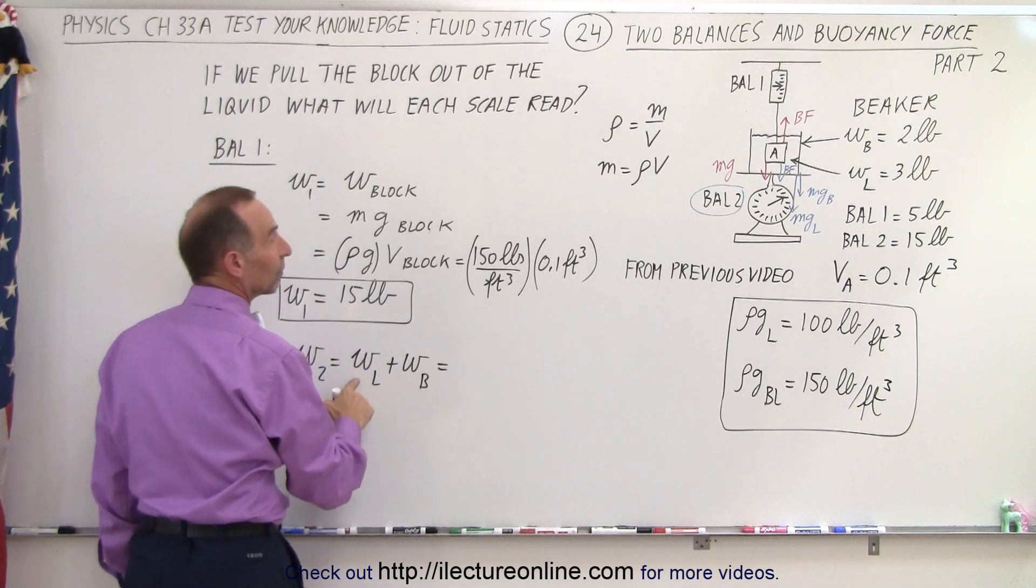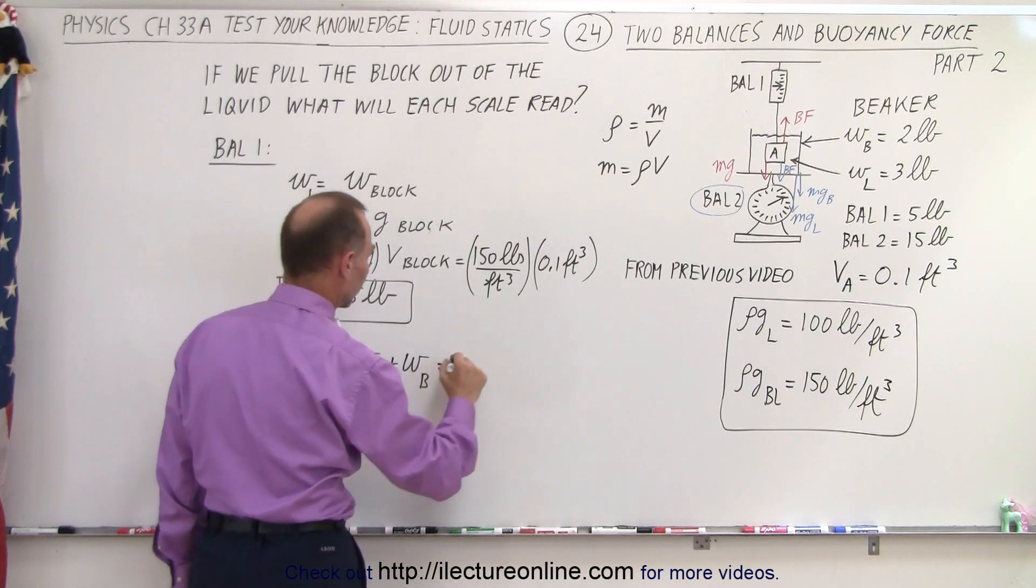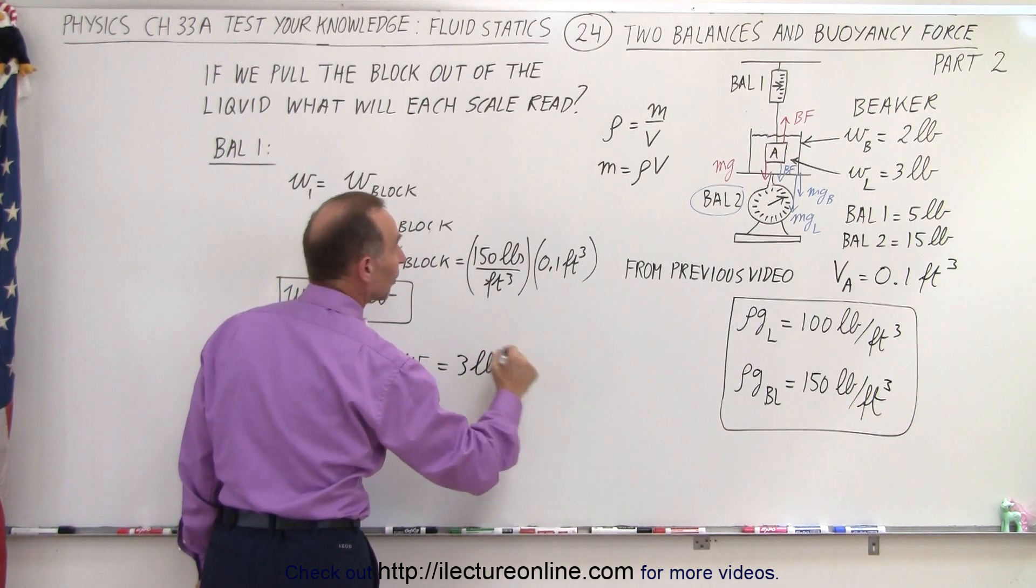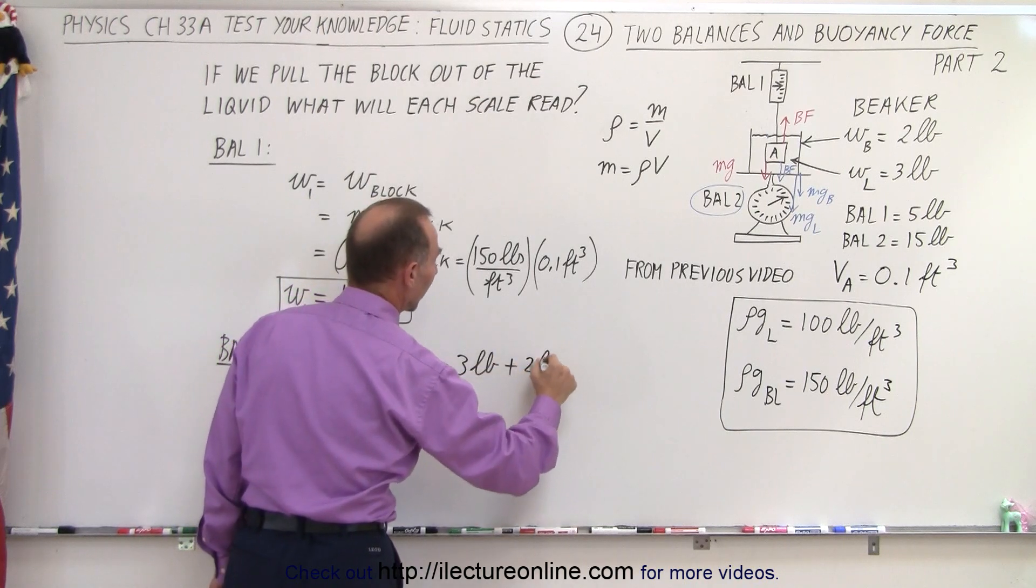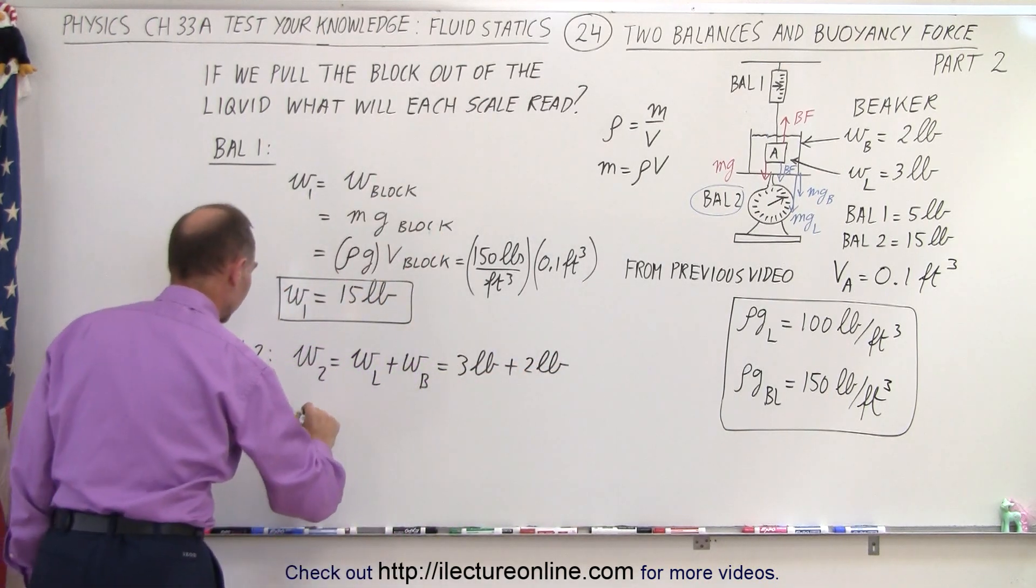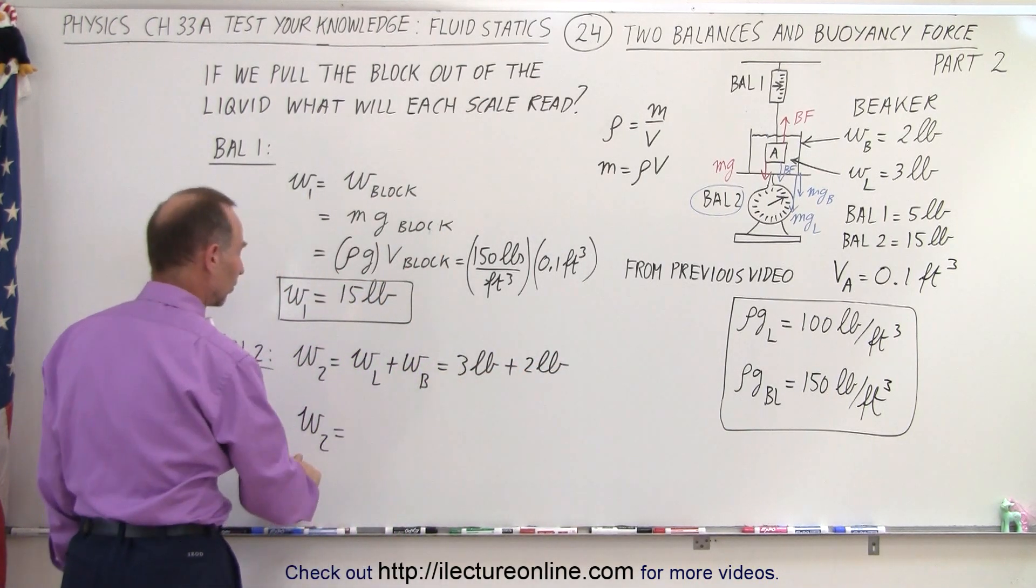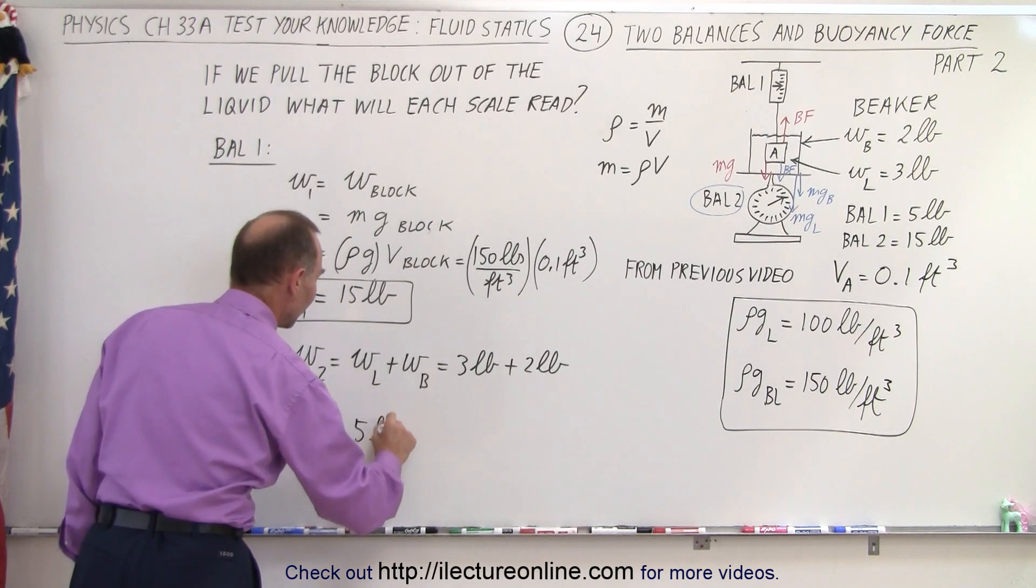And of course the weight of the liquid was given to us as 3 pounds and the weight of the beaker was given to us as 2 pounds. So notice that the reading on scale number 2 is going to be 5 pounds.